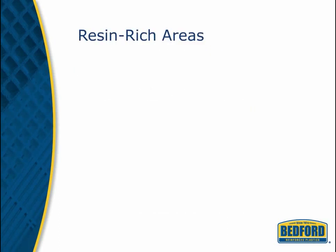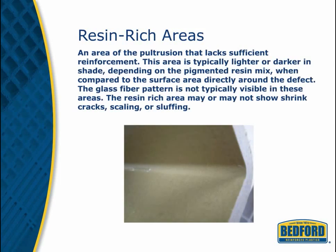Resin-rich areas appear lighter or darker than the surface area directly around the defect, depending on the resin mix. The glass fiber pattern is not typically visible in these areas, and the resin-rich area may or may not show shrink cracks, scaling, or sloughing. This defect is acceptable as long as the product meets test requirements.